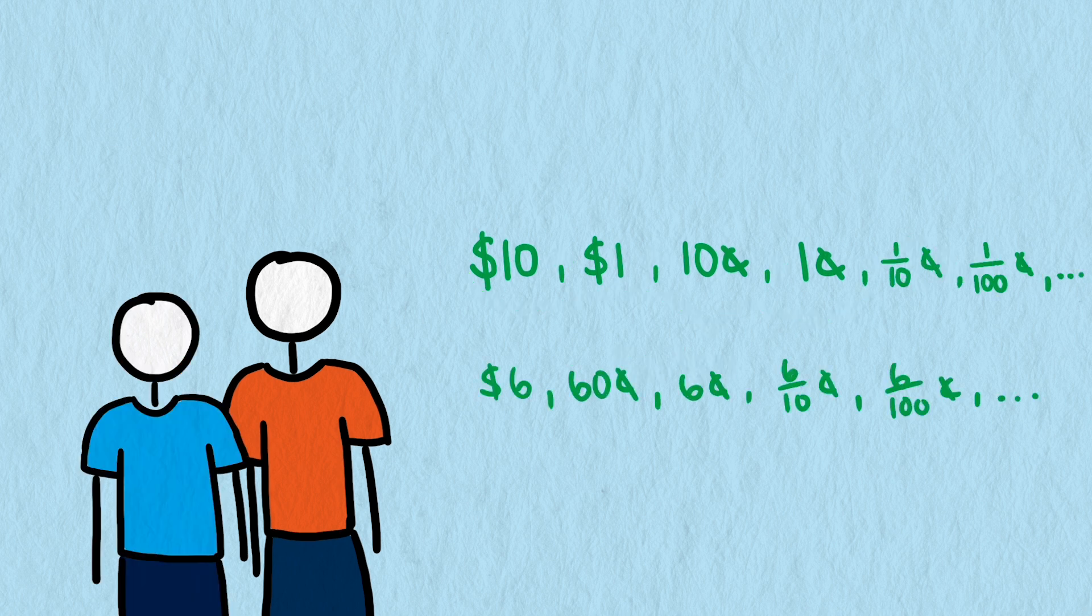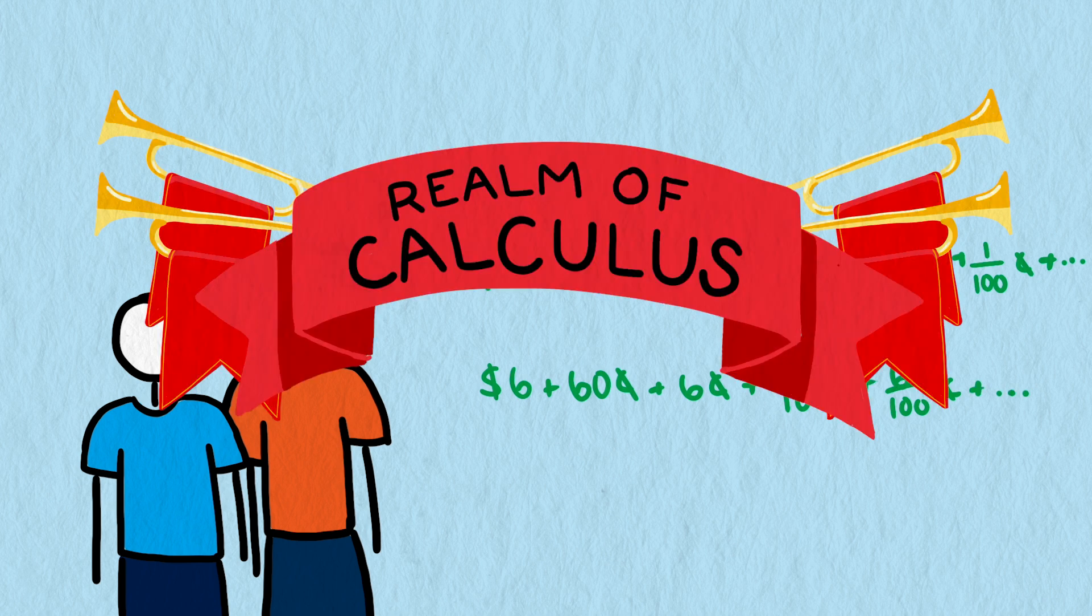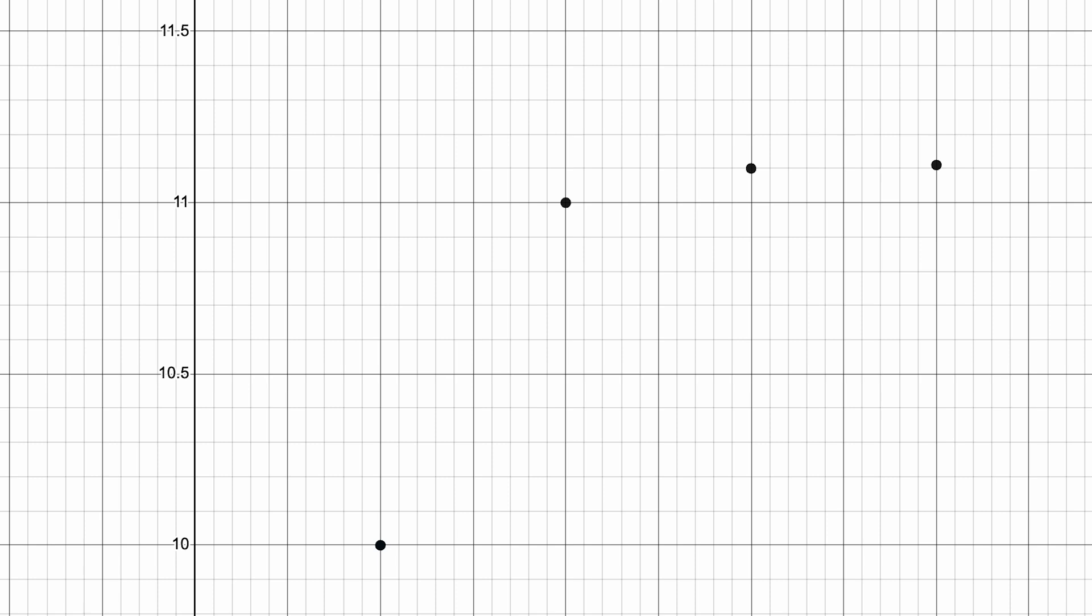Both of these sequences my kids came up with could have continued indefinitely, and the series created from their sequences could have had infinitely many terms. This is where we actually get into the realm of calculus. There is an infinite sequence. Does it creep up to one particular number?